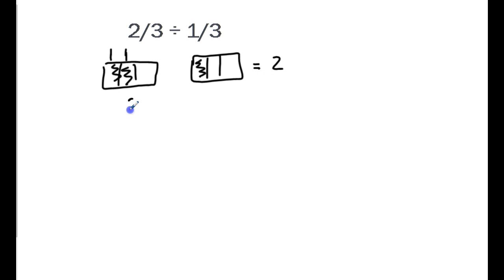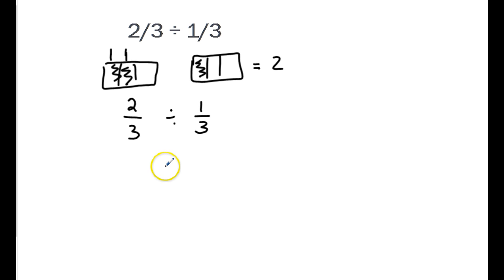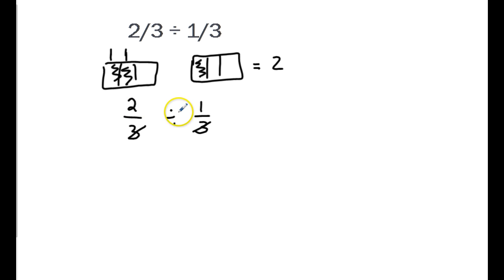To show this another way: we have two-thirds divided by one-third. This is the same as asking how many twos are in six — you'd say three. How many twenties are in sixty? Three. How many two-hundreds are in six-hundred? Three. It doesn't matter the unit; it's just a division problem. So I can go ahead and ignore the units and just divide the numerators. Two divided by one equals two — and that's representing it algebraically.